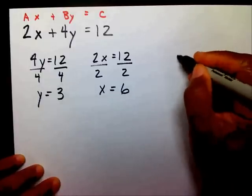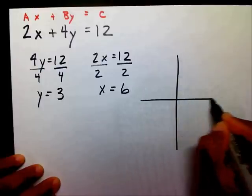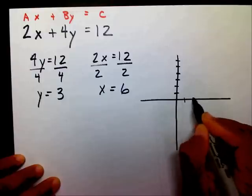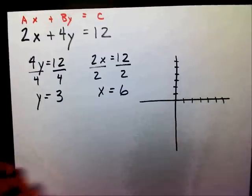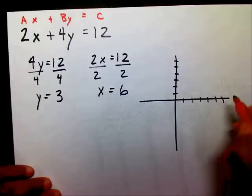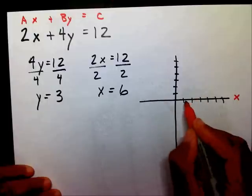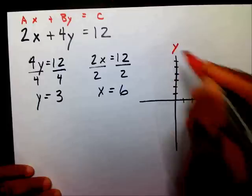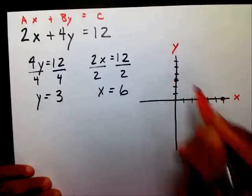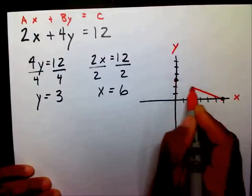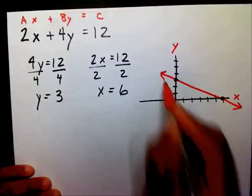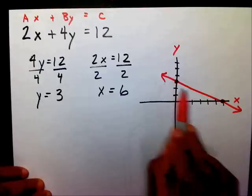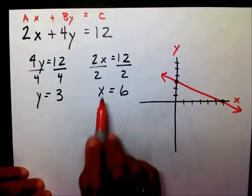So if I need to graph that, on my x-axis I'm going to put a dot on 6, and on my y-axis I'm going to put a dot on 3. I'm going to extend my line — and there is my line. I was able to draw my line by using my x and y-intercepts.